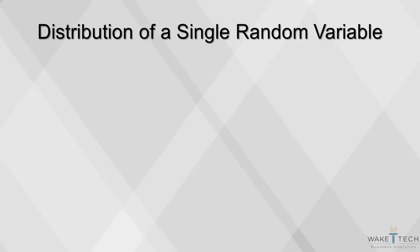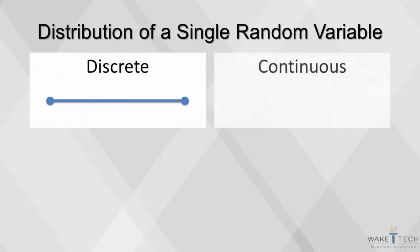There are two types of random variables: discrete and continuous. A discrete random variable has only a finite number of possible values, whereas a continuous random variable has a continuum of possible values.